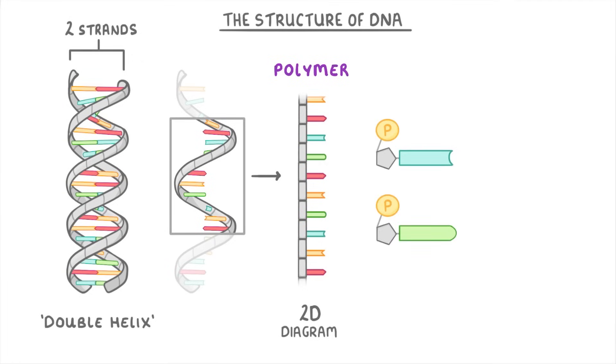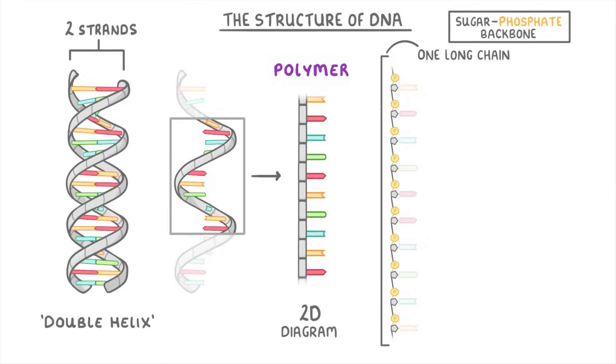If you take a look at these two nucleotides here, we can see how they'd combine together to form a polymer. Basically, the phosphate of one nucleotide bonds to the sugar of the next nucleotide, and this process then keeps repeating for thousands of nucleotides so that the sugars and phosphates form one long chain which we call a sugar phosphate backbone.